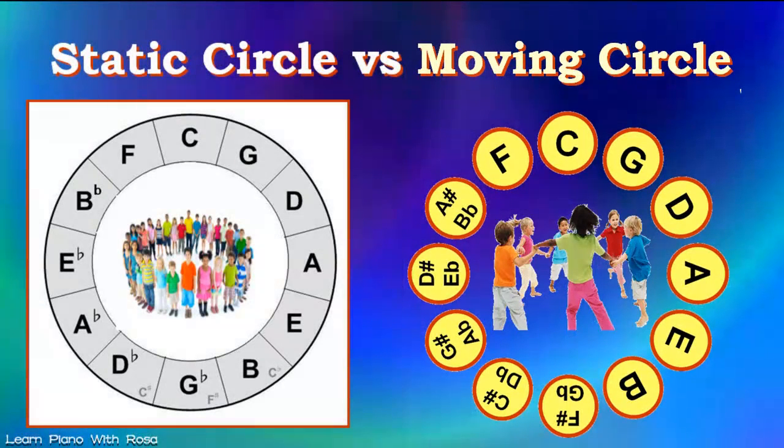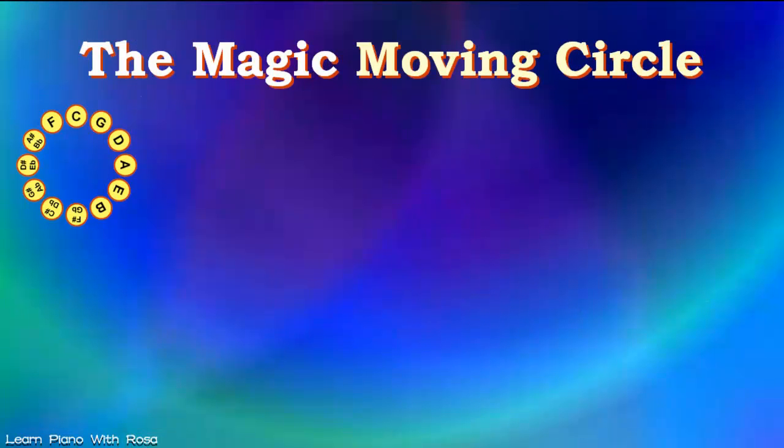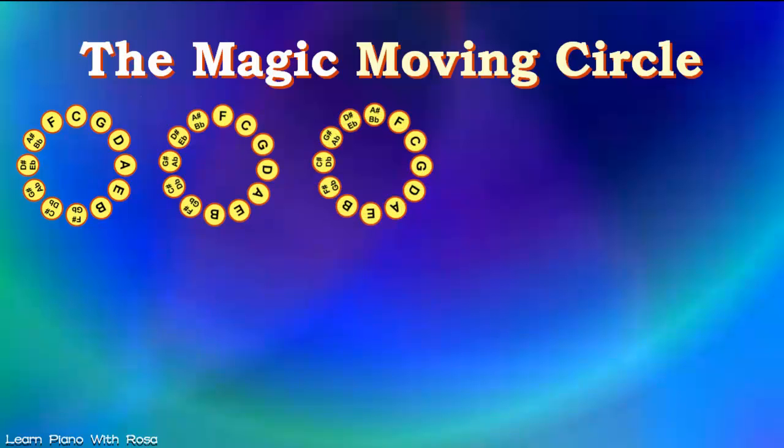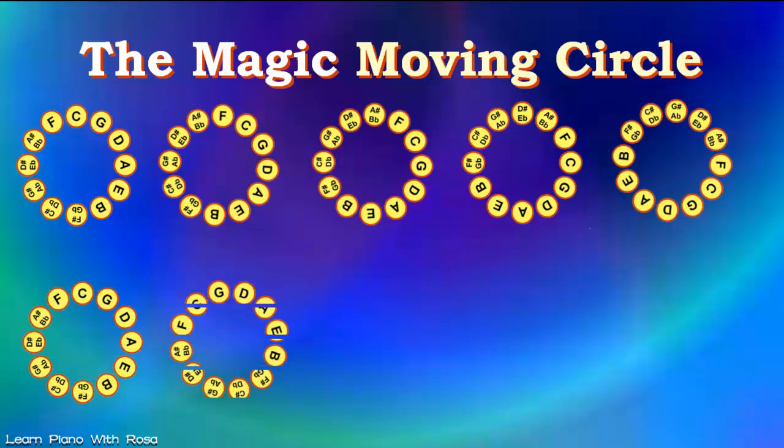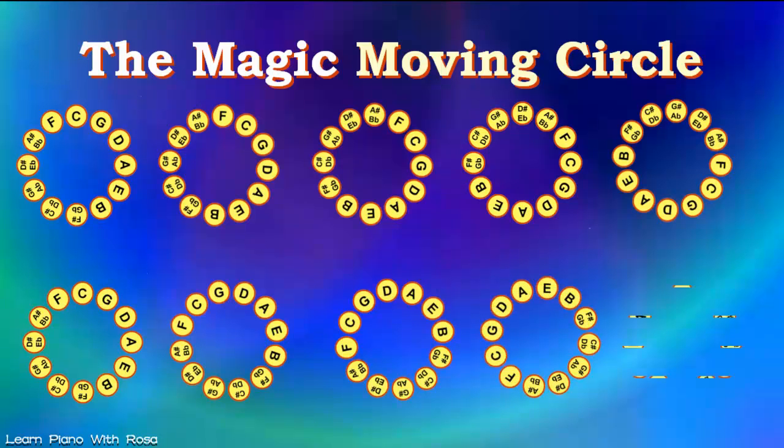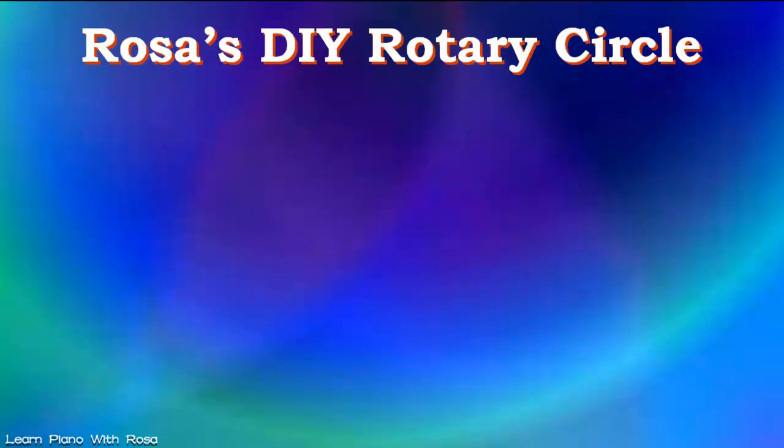This is how I want you to understand the circle of fifths. When you make the circle facing one another, you begin to see the circle moving dynamically. And there's a reason to this. And you'll be able to find all the major keys, all the major scales by moving this circle. So the first thing you need to do is to create your own rotary circle of fifths.